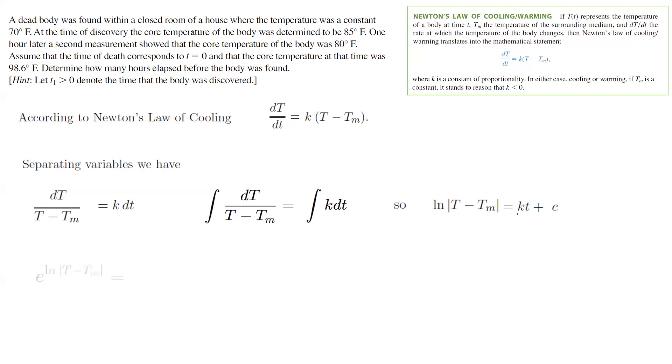Now we are going back to algebra. This can be written as e to ln of absolute value of T minus T sub m. And on the right-hand side, you have e to power Kt plus C. But remember that exponential function and ln, they are inverse of each other. So you can get rid of them. You end up with absolute value of T minus T sub m. On the right-hand side, you have e to Kt times e to C.